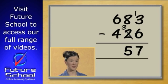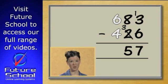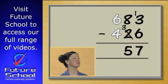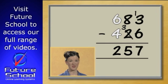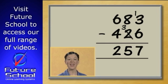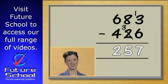In the hundreds column, we have 6 take away 4. And the answer to that is 2. Put the 2 in the hundreds column. The answer to our problem is 257.